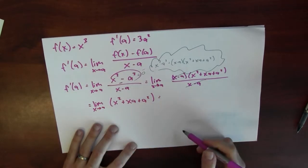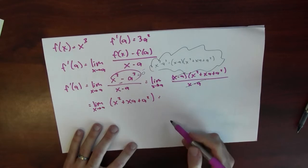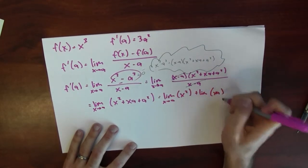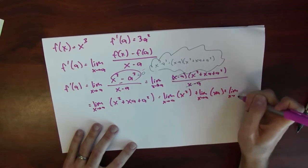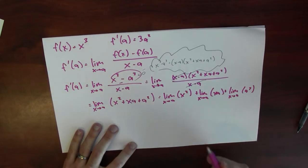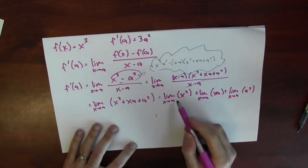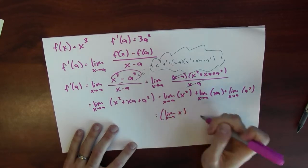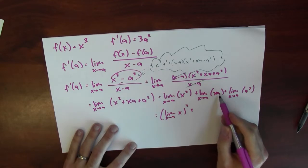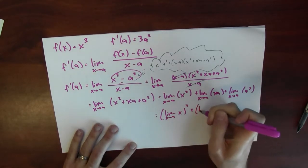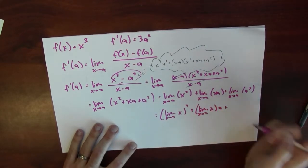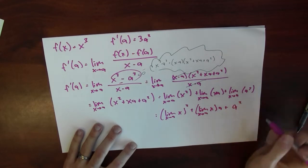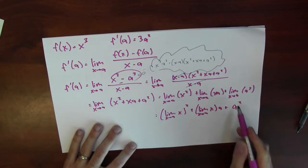Now, how do I evaluate that limit? Well, that's a limit of a sum, so it's the sum of the limits. This is the limit as x goes to a of x squared, plus the limit of xa as x goes to a, plus the limit as x goes to a of a squared. The limit of x squared as x goes to a is the square of the limit. This is the limit of x times a constant a — only x is moving, a is a constant — so this is the limit as x goes to a of x, times a. And this last term is just a squared, since a squared is constant as far as wiggling x is concerned.